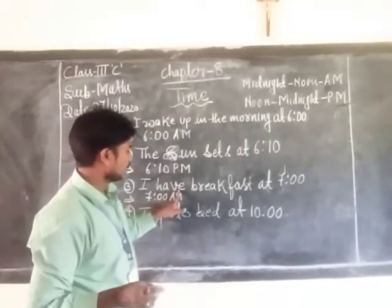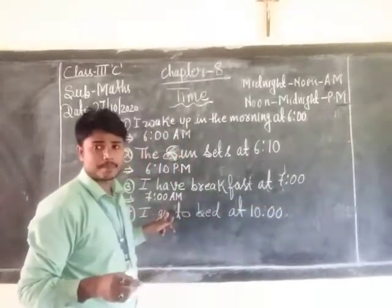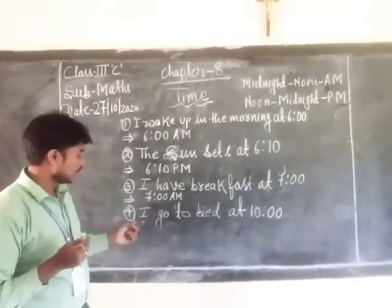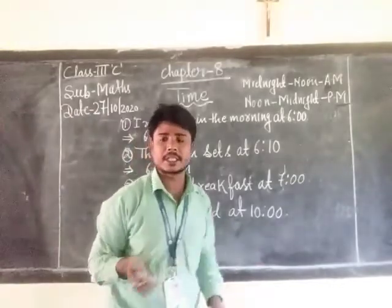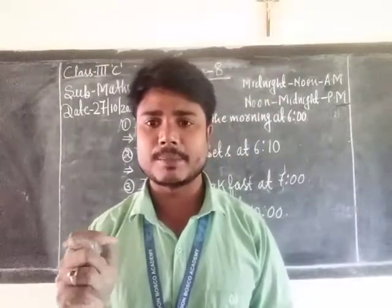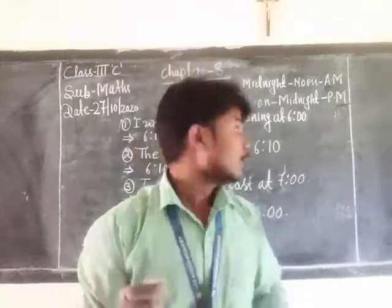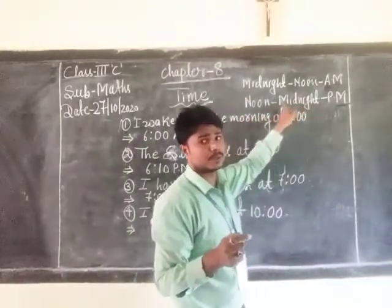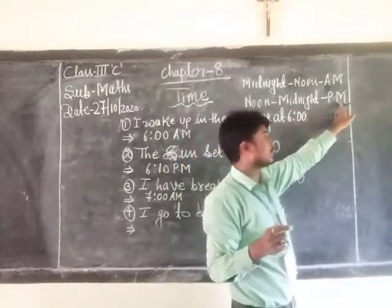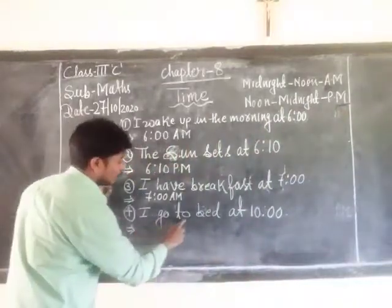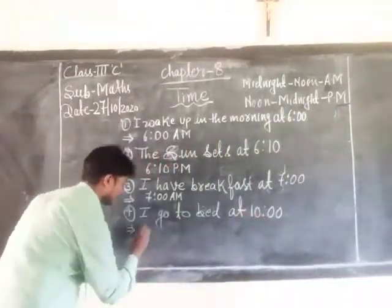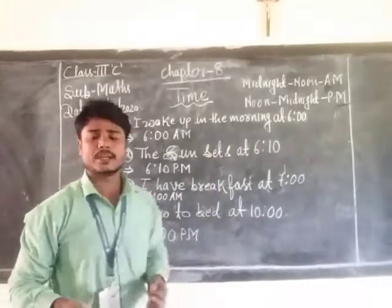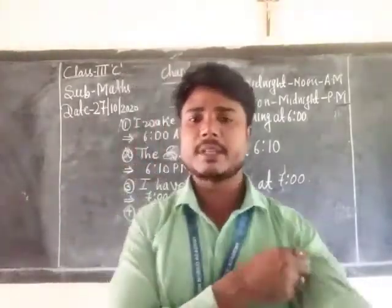The last question: I go to bed at 10. Generally, we go to bed during the night time, which is from noon to midnight, so for this period we are using PM. I go to bed at 10 PM. Hope you all have understood how to write AM and PM. Thank you, everyone.